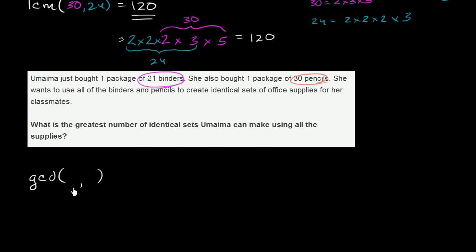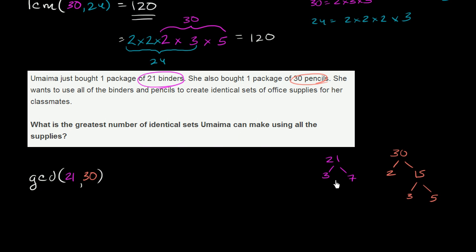Let's think about what the greatest common divisor — or greatest common factor — of 21 and 30 is. What's the largest number that divides into both of them? Let's use the prime factorization method. 21 is the same thing as 3 times 7 — both prime numbers. 30 is 2 times 15, and 15 is 3 times 5. So what's the largest number of prime factors common to both factorizations? You only have a 3 here — you don't have a 3 times anything else. So the greatest common divisor is just going to be equal to 3.